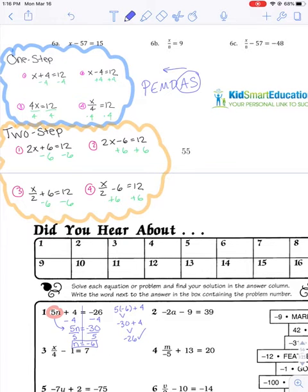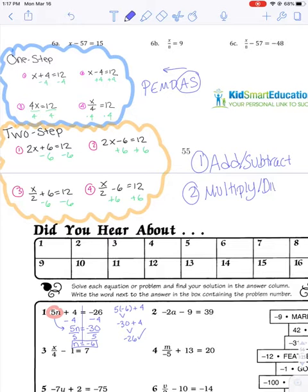All right, hopefully you've given number 2 a try. I'm going to write some rules for us to refer to. My rule is going to be that you always add or subtract first. Then you multiply or divide.